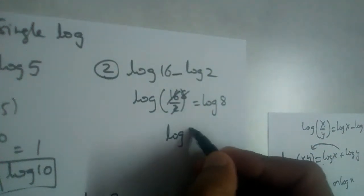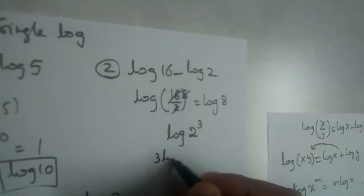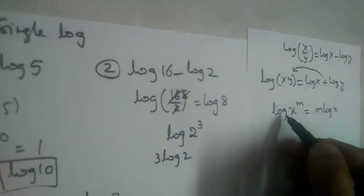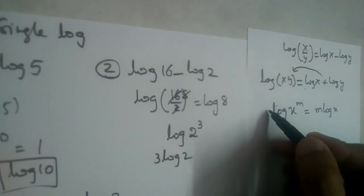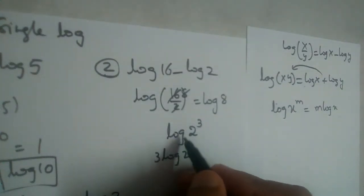But how can we write 8? We can write it as 2 cubed, and this 3 will come in front of log. It will become 3 log 2. Which formula are we using here? This one: log x whole power m. This power will come in the front. So it will become m log x. So similarly here, log 2 cube, this 3 will come in the front, so 3 log 2.